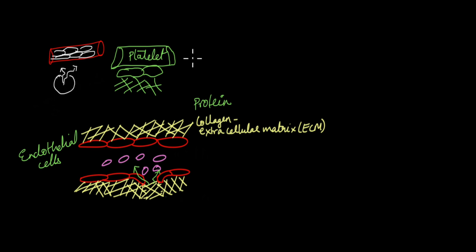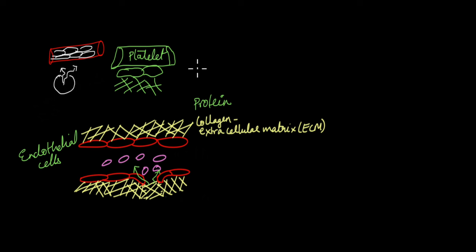When there is no injury, platelets do not come in contact with the collagen of the extracellular matrix, so they need not jump into action and form any blood clots. This is good for us, because if this process were not regulated, platelets would keep forming blood clots at all times at random places, which is not good for our circulatory system. So platelets have a mechanism to jump into action only when there is an injury.